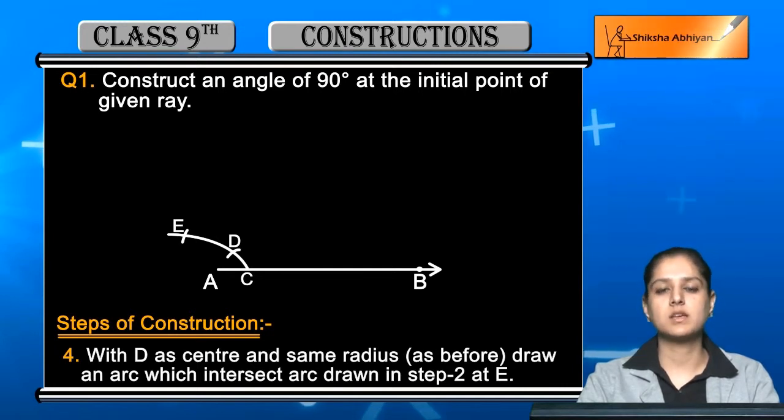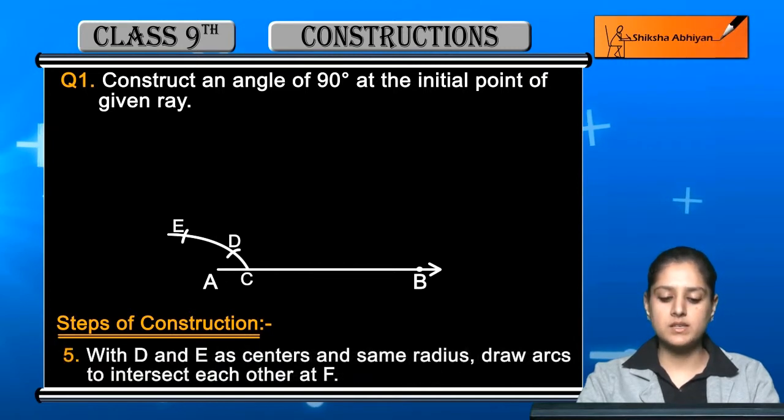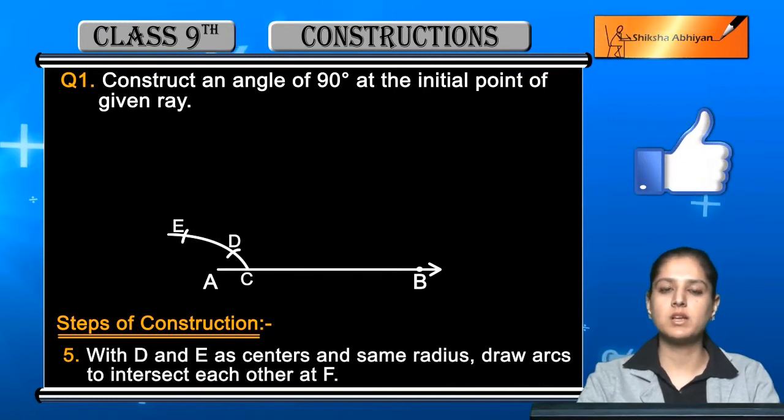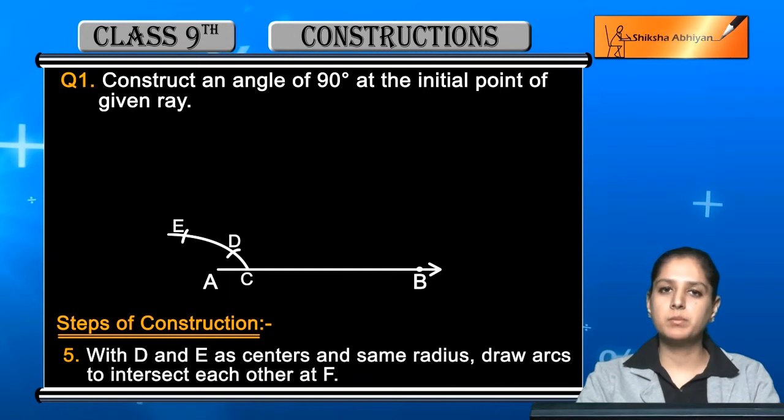The next step is: with D and E as centers and the same radius, draw arcs to intersect each other at F. Now D and E, you will take the same radius for both. First you will keep D and draw one arc, then you will keep E in the compass and intersect at the same arc which you have made from D, so it will become a cross type.